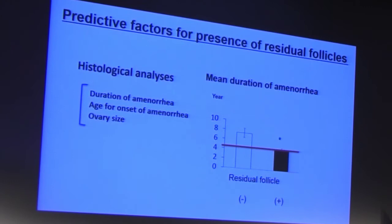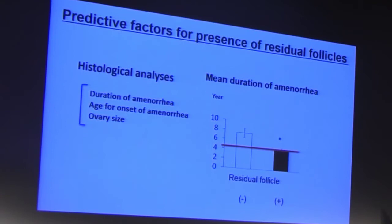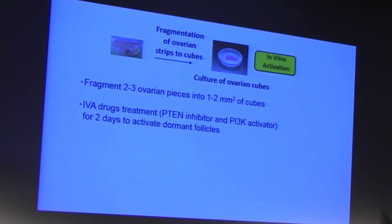We analyzed the correlation between histological data and duration of amenorrhea, age at onset of amenorrhea, and ovary size, and found that the best predictive factor for residual follicles is the duration of amenorrhea. Up to four years of amenorrhea, patients are likely to have residual follicles. The next step is fragmentation of two to three ovarian pieces into tiny ovarian cubes, treated with IVA drugs — the PTEN inhibitor and PI3K activator — for two days to activate the dormant follicles.